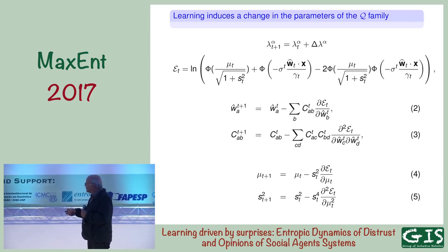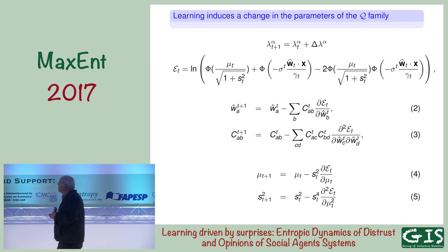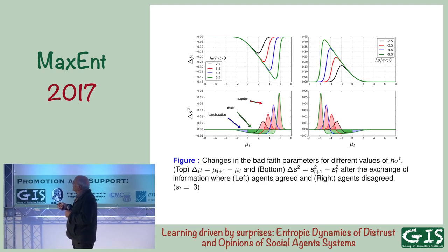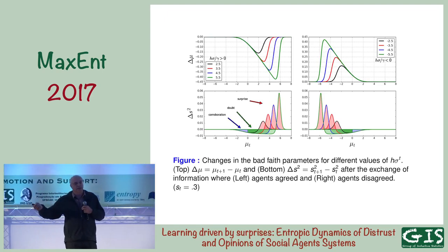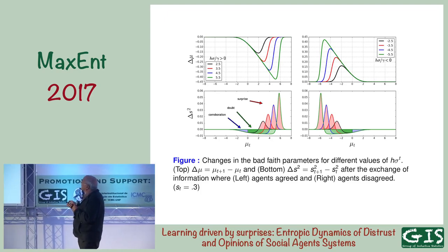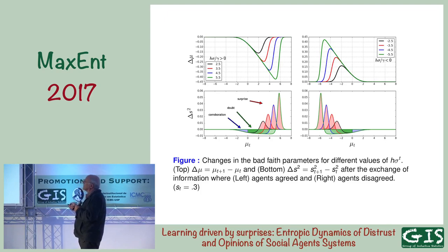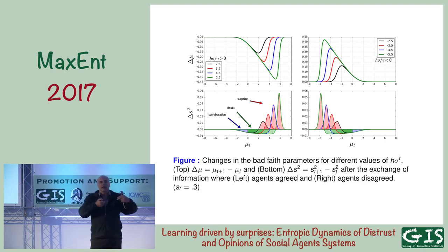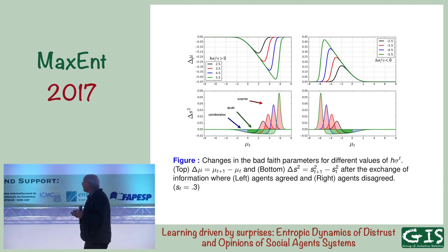For the distrust model, it's also a gradient with respect to the log of the evidence. This is the change in distrust when the agent that receives the information agrees with the agent that emitted. If they agree and they were already in a trusting relation, nothing much happens. But if they agree and they were in distrust, there's a negative change in mu — mu gets more negative and the distrust diminishes. That's the dynamics.